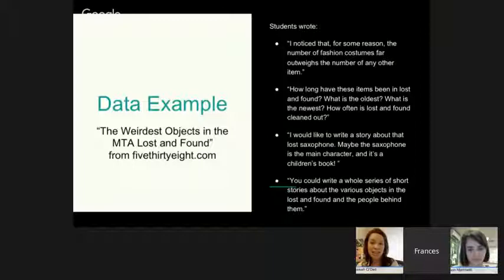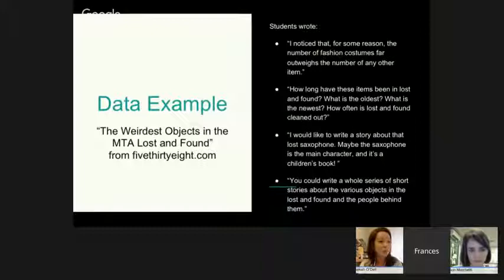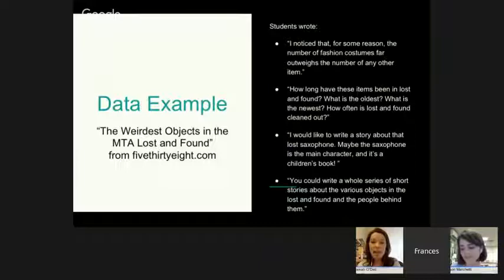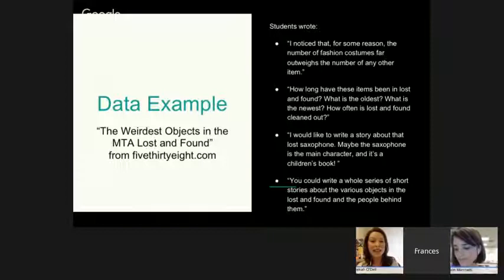Here's some observations that my kids wrote down and shared with the class. One student said, 'I noticed that for some reason the number of fashion costumes far outweighs the number of any other item.' So they were imagining why that might be. One student asked a question: 'How long have these items been in lost and found? What's the oldest item there? What's the newest? How often do they even clean out lost and found?' Another said, 'I would like to write a story about that lost saxophone. Maybe the saxophone is the main character and it's a children's book.' Or you could write a whole series of short stories about various objects in the lost and found and the people behind them. It reminded me of Edgar Lee Masters and Spoon River Anthology.